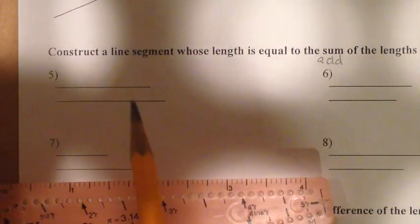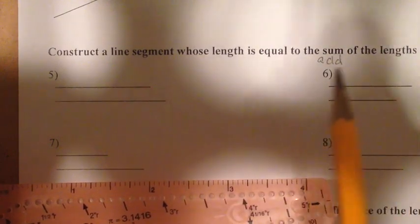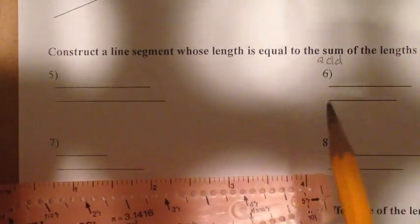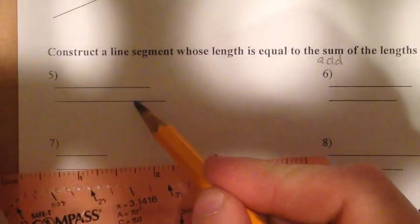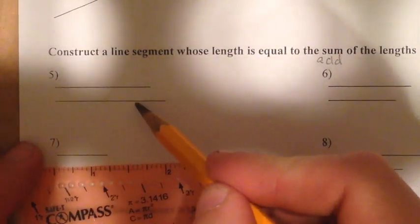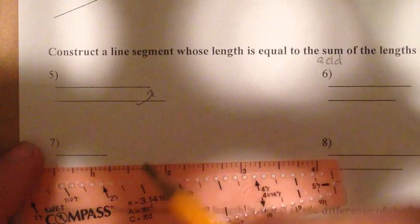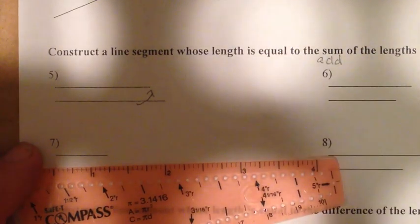And it actually says construct a line segment whose length is equal to the sum of the lengths. There's kind of a cheater shortcut way to do this, and that's just take one of these and move it on to the other one. And that's what I'm going to do in this case. This is kind of the easier version.